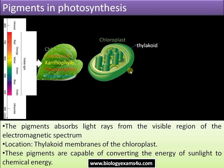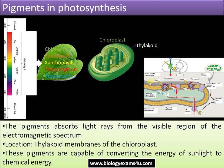These pigments are located on an organelle called the chloroplast. Inside the chloroplast there is the thylakoid; this stack is called the granum and each unit is called a thylakoid. In this enlarged view of the thylakoid membrane, you can see photosystem 2 and photosystem 1, where these pigments are located and can absorb light energy.